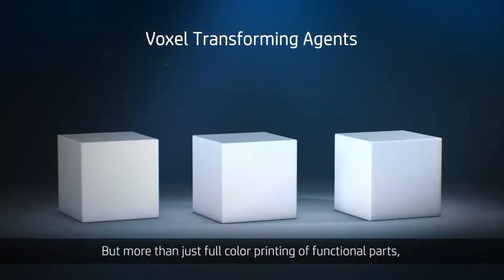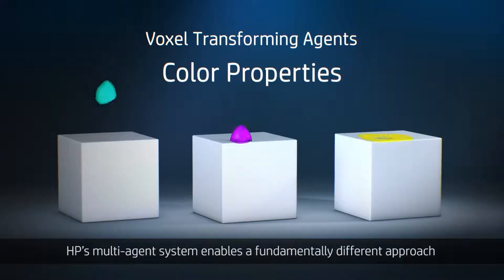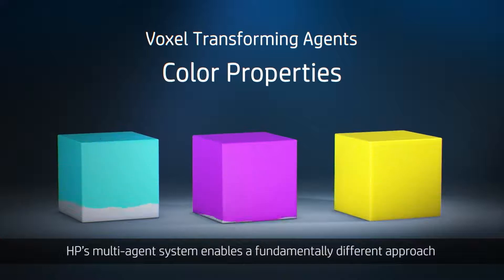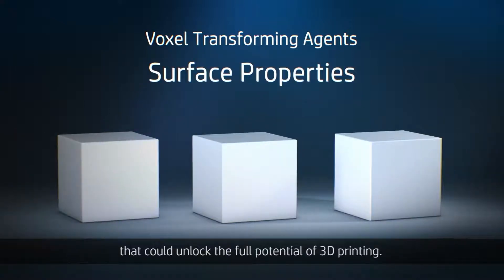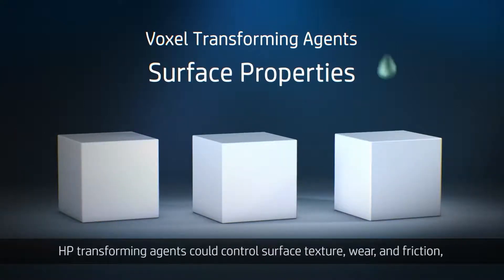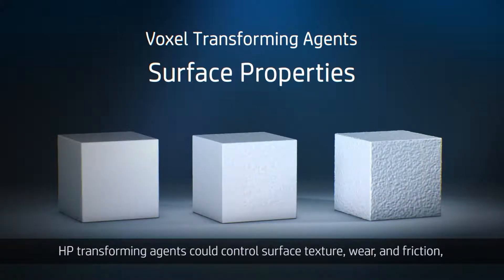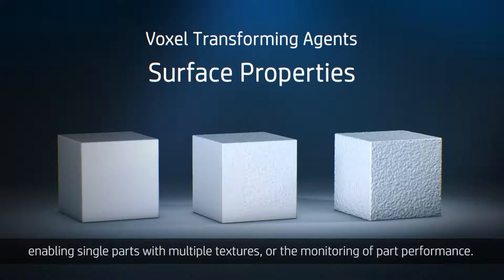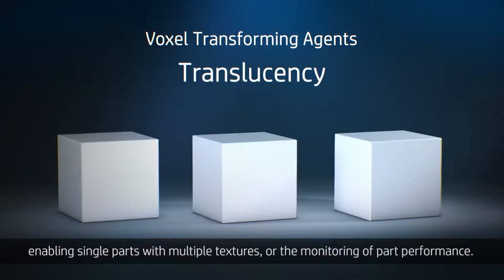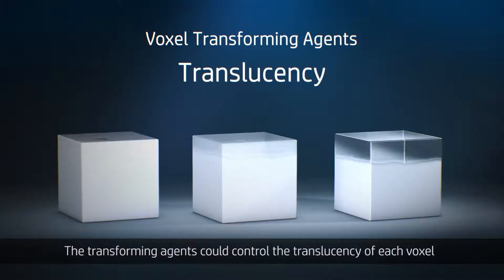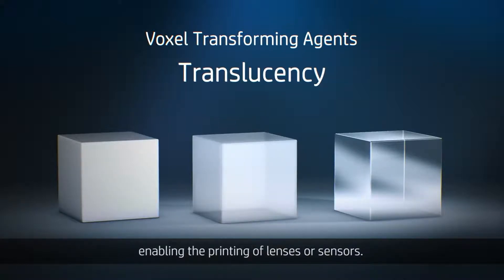But more than just full color printing of functional parts, HP's Multi-Agent System enables a fundamentally different approach that could unlock the full potential of 3D printing. At each voxel, HP transforming agents could control surface texture, wear and friction, enabling single parts with multiple textures, or the monitoring of part performance. The transforming agents could also control the translucency of each voxel, enabling the printing of lenses or sensors.